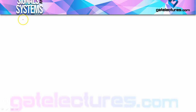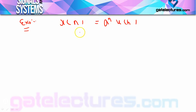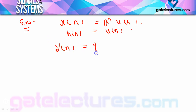In this case, suppose a question is X(n) = A^n * U(n) and H(n) = U(n). We need to solve X(n) convolution H(n), that is we need to calculate Y(n).